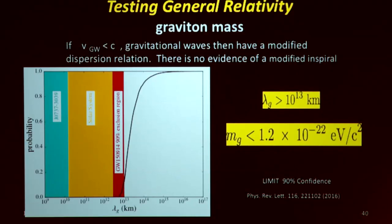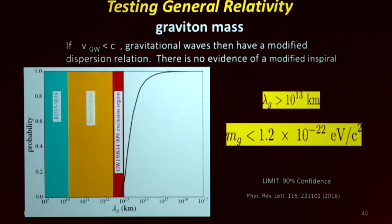A different test: assume there's a massive particle associated with the gravitational waves — a graviton. If it has a mass, different frequencies propagate at different speeds, giving a dispersion relation we can test. On the very first event, we set the best limit so far on the mass of a graviton: 10 to the minus 22 eV over c-squared.